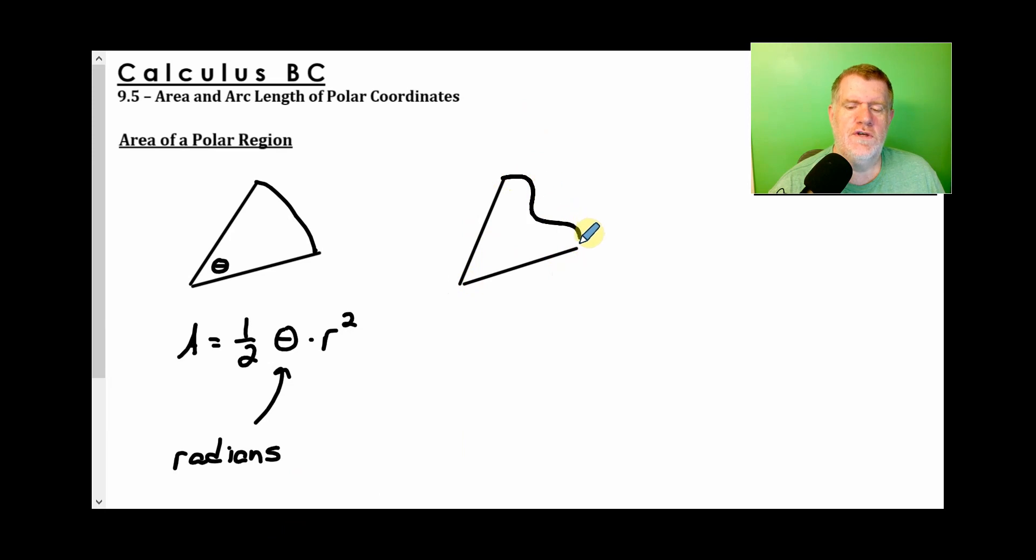Now a polar region is the same idea. We've got ourselves kind of a sector, but with polars this isn't necessarily a continually smooth curve. It could be something like that. How do we find the area of that? Well, it's calculus. Our goal is to find little pieces that are more accurate and add them all up.